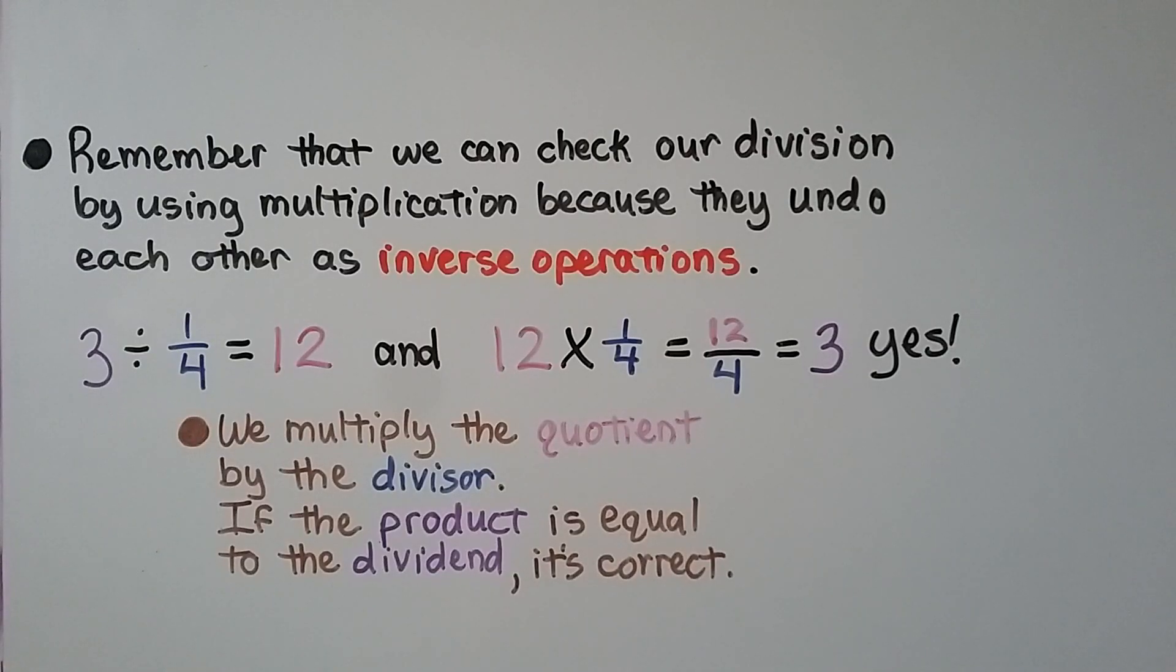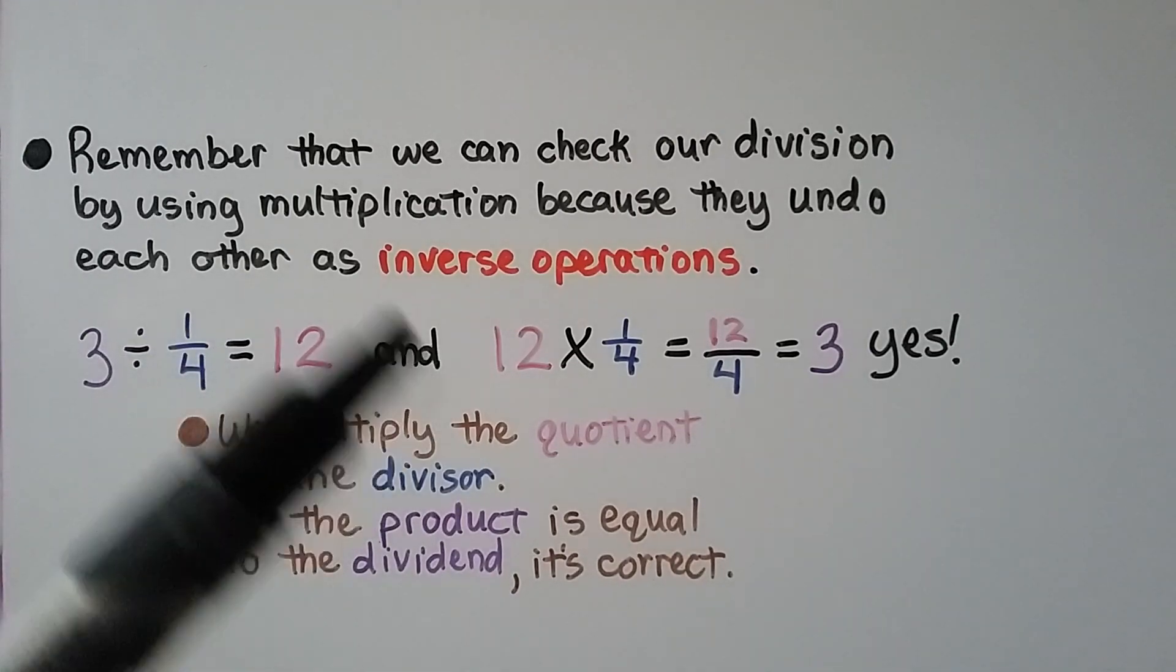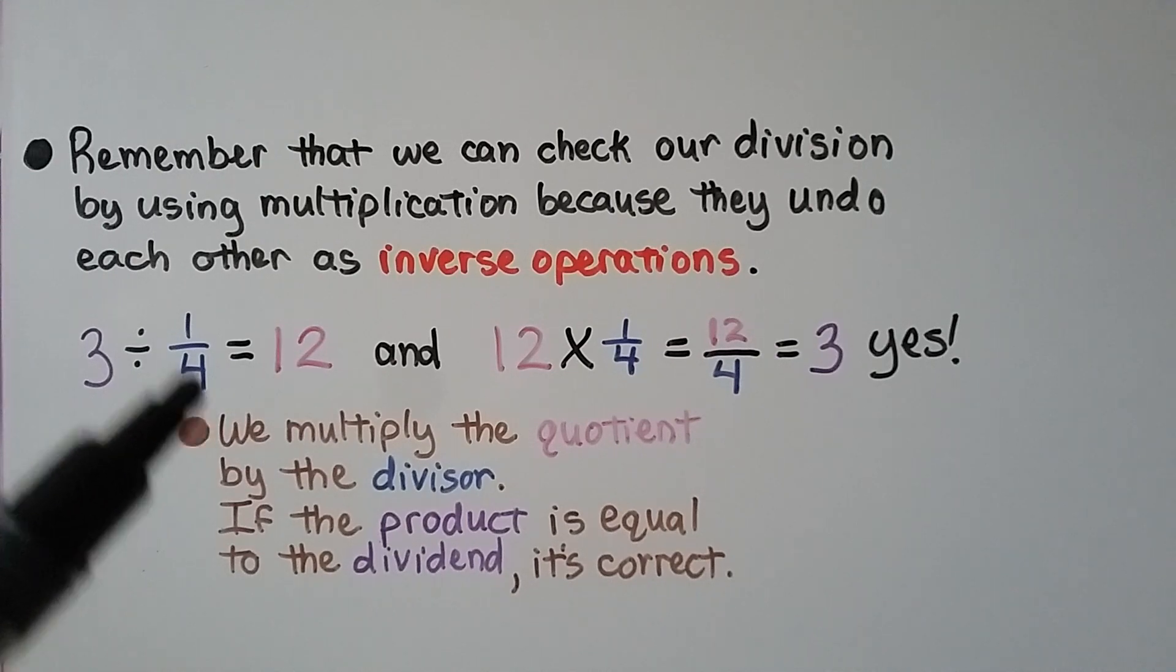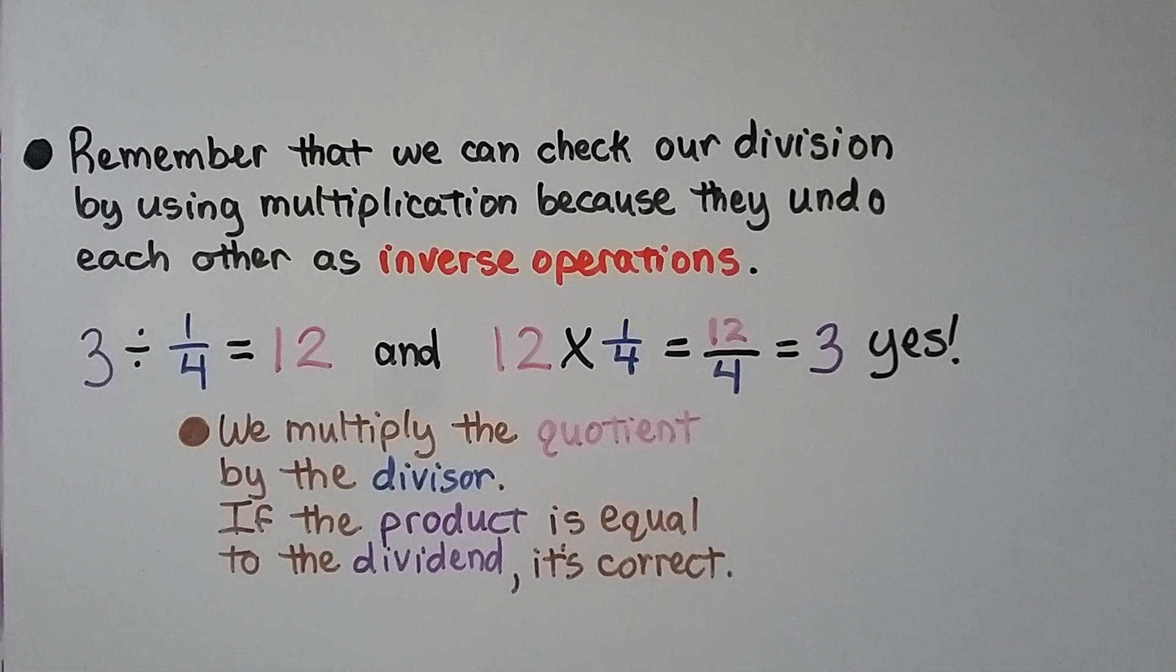And remember that we can check our division by using multiplication because they undo each other as inverse operations. 3 divided by 1 fourth is equal to 12, and 12 times 1 fourth is equal to 3. We multiply the quotient by the divisor, and if the product is equal to the dividend, it's correct.